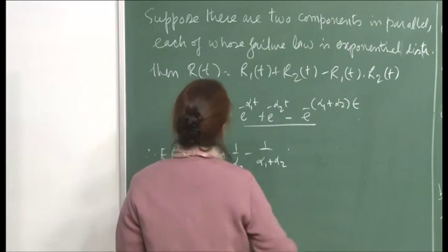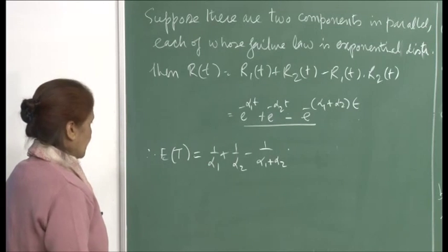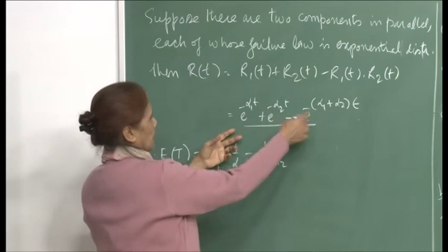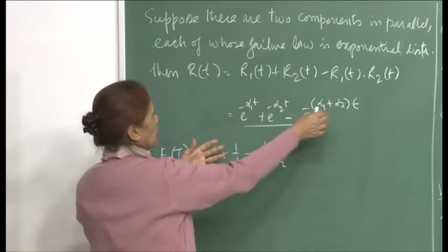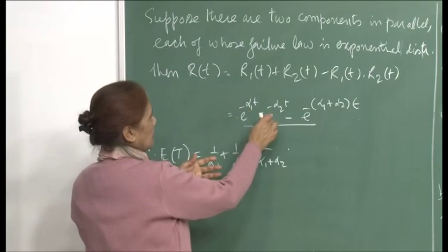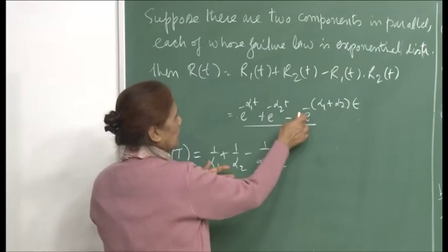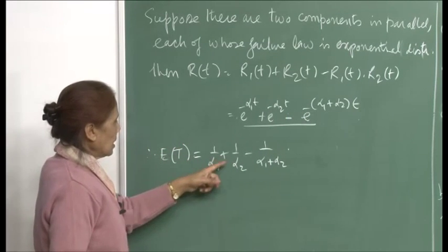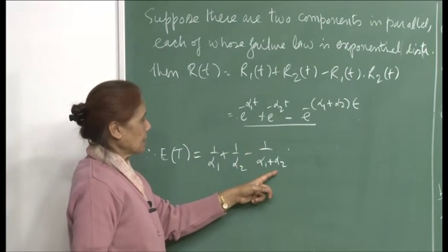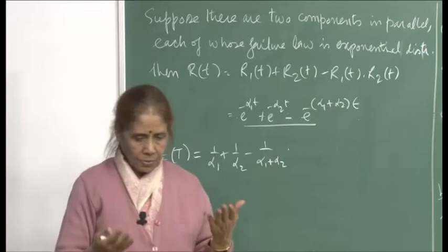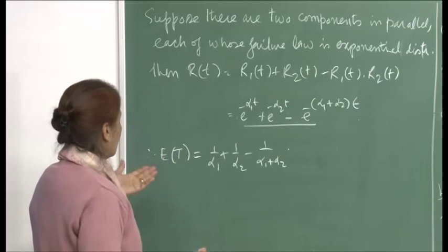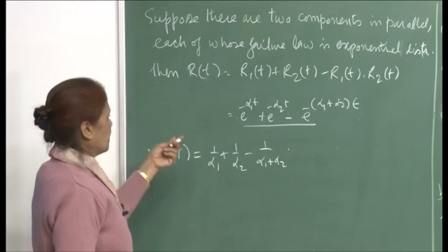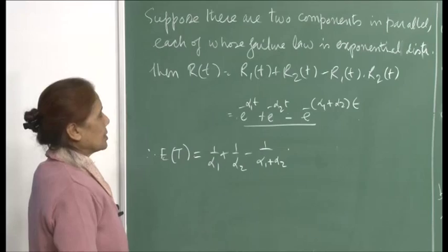Because they function independently of each other, this gives the reliability function. Then the expected time to failure E(T) for the system: when you integrate each term separately from 0 to infinity, it will be 1/α1 + 1/α2 − 1/(α1 + α2). Once you know the functional form of the reliability function, you can make all computations you need.